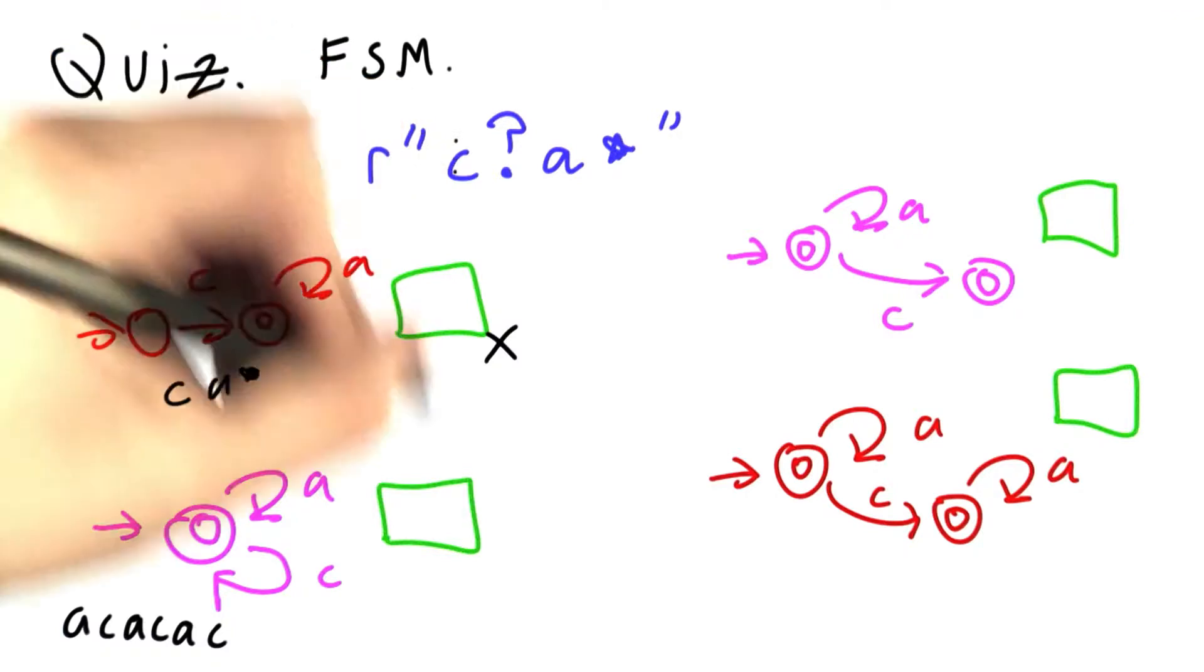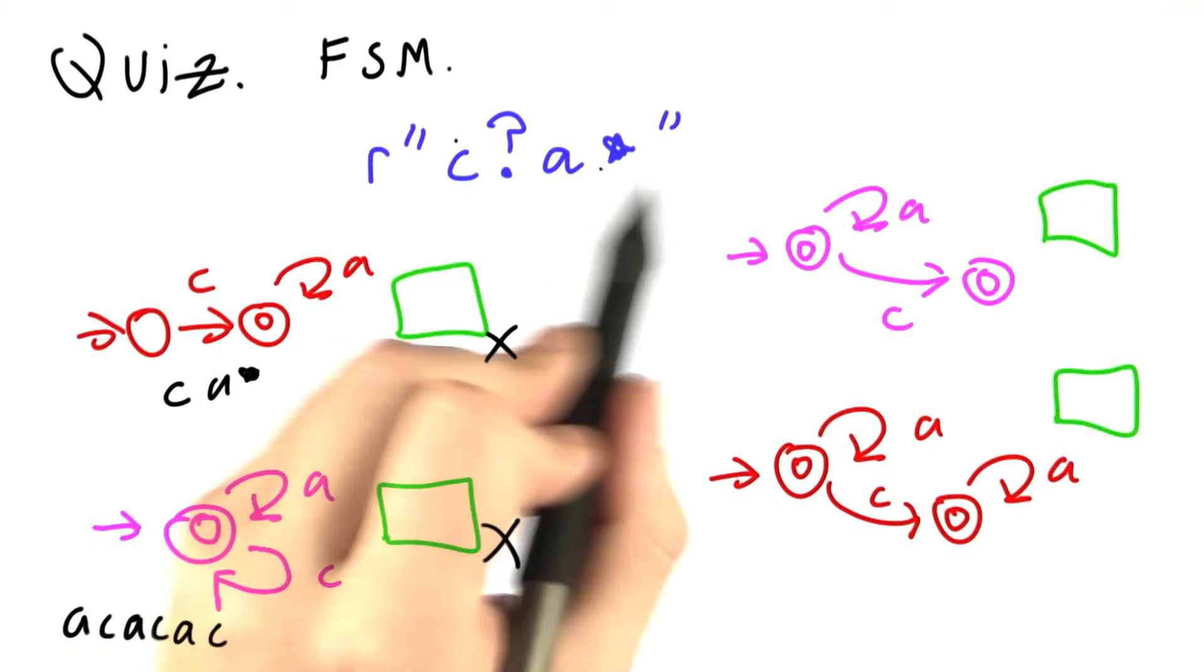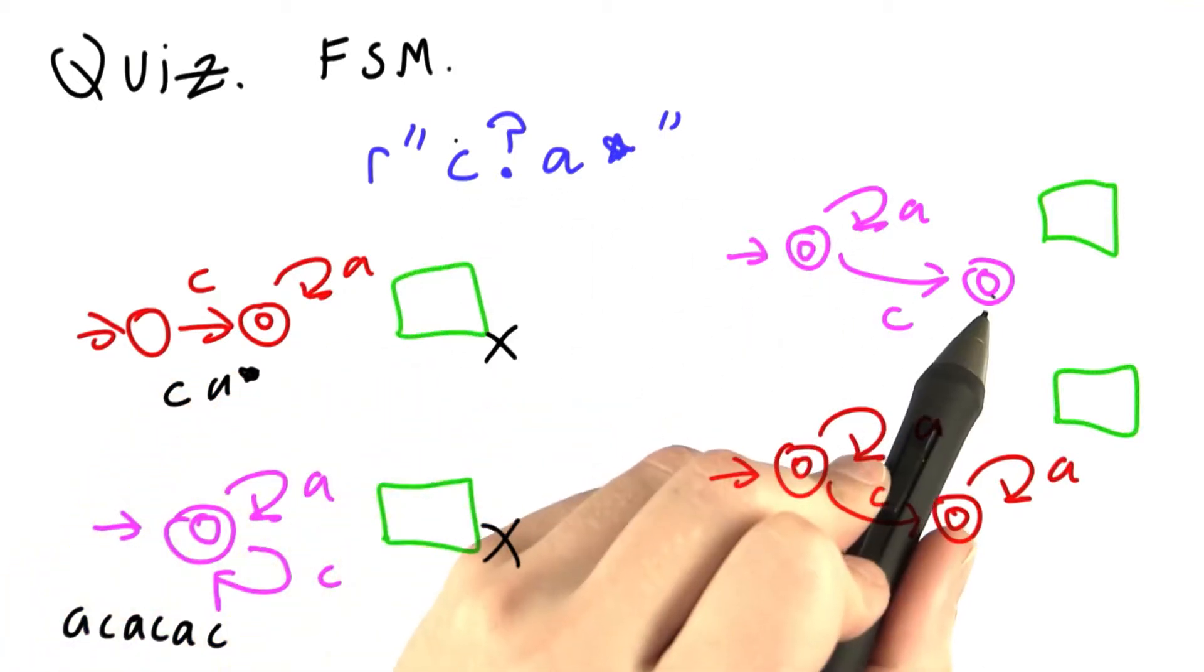The regular expression up top does not. Over here, this is looking relatively promising. If we have no c's, we can have a star. That's pretty good. And we can also have an optional c.